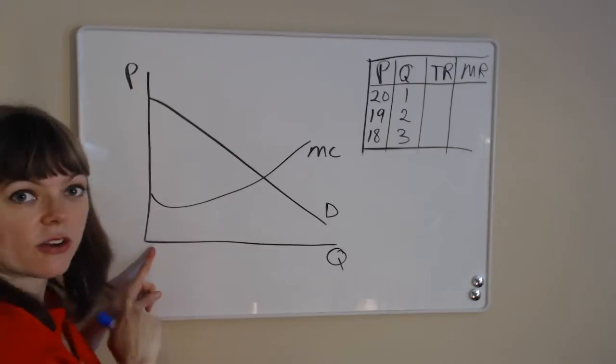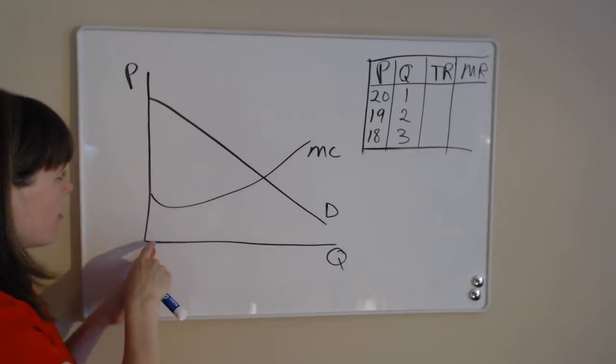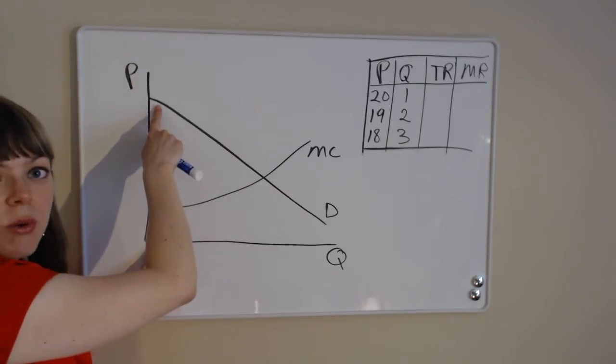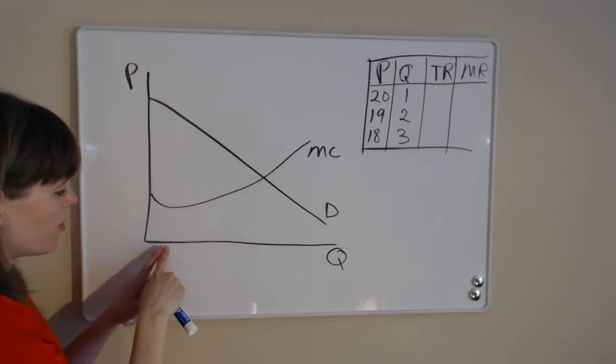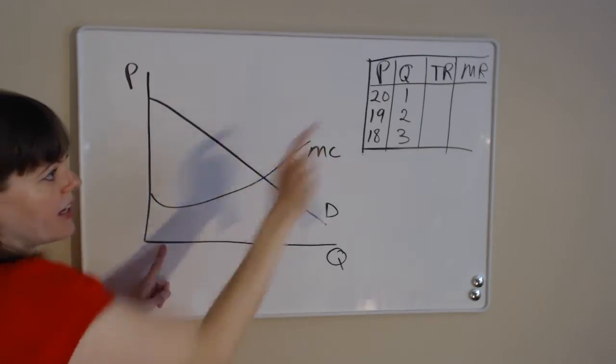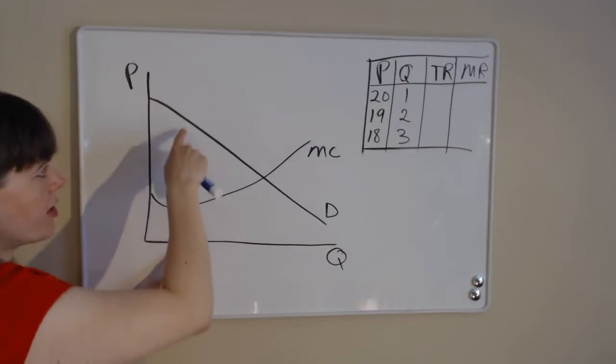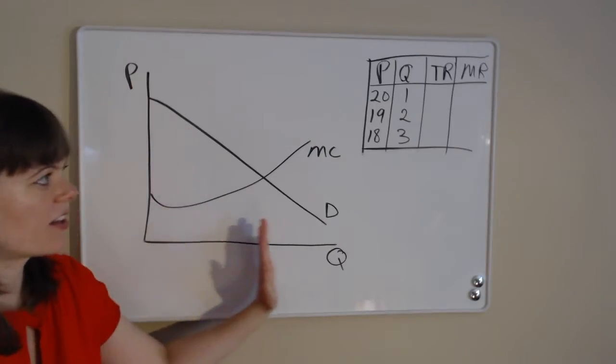And here's the beginning of our demand curve. So person number one, the person located right here on this model, they're willing to pay $20 for the product. Person number two, which is located right here, they're willing to pay $19 for the product. Person number three is willing to pay $18, and so on and so forth.